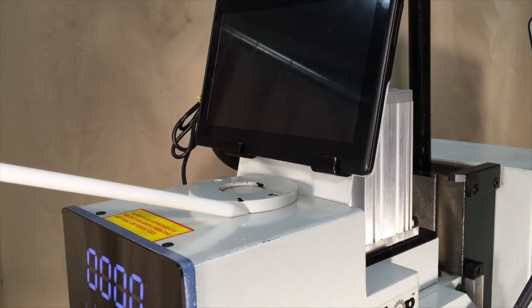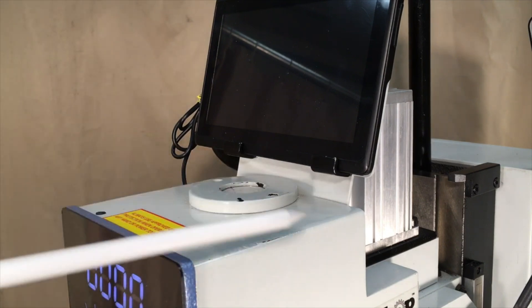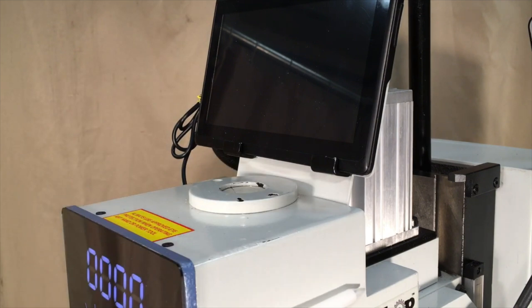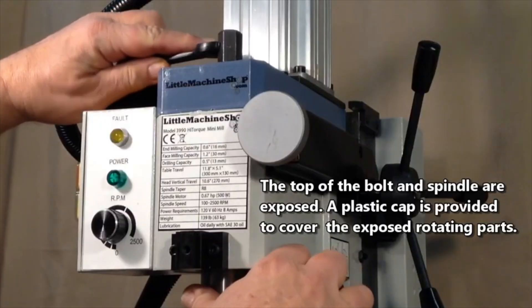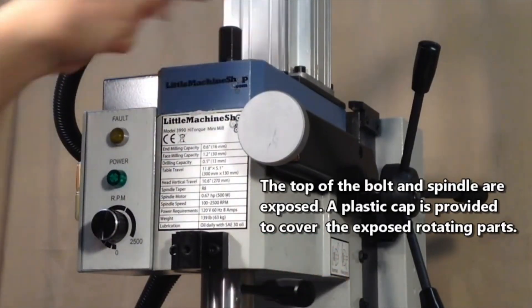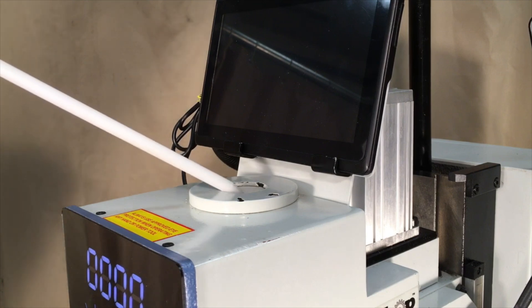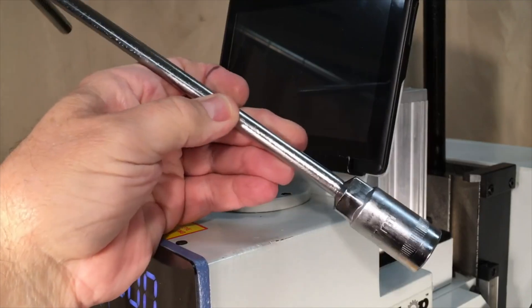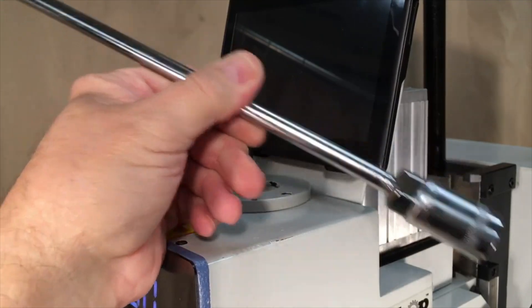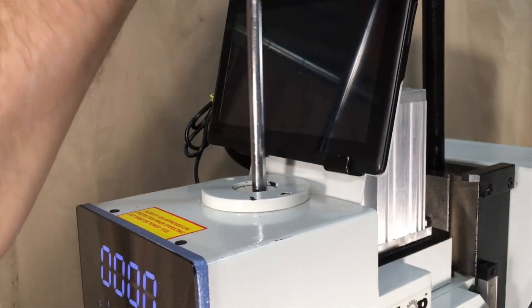And here again, this model 6450 mill is different from any of the ones I've reviewed before. On all of the others, the top of the drawbar actually extended above the top of the head, so that it was directly accessible. On this mill, it's recessed down in here. So you have to have some other way to hold on to it. But for that purpose, the manufacturer has included this long T-handle wrench and it drops down. And then you can turn it until it drops onto the head of the drawbar.